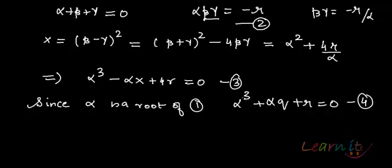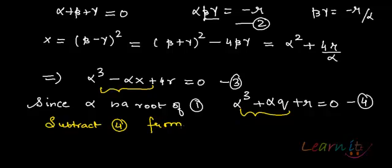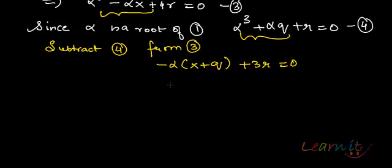If we subtract, I have two equations in terms of similar terms. I can just subtract 4 from 3. What will I have? α³ will get cancelled out and what I will be left with is minus αx plus qα plus 3r equals to 0. And this will give me that α equals to 3r by (x+q).